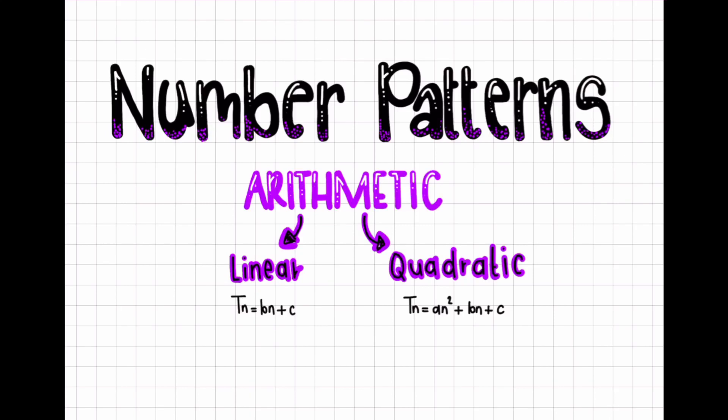Hi everyone, welcome to our second video on number patterns. We're talking about arithmetic number patterns — arithmetic means that the number pattern has a constant difference. Arithmetic number patterns are broken up into two types: linear number patterns and quadratic number patterns. Linear number patterns are patterns with a constant first difference, and quadratic number patterns are patterns with a constant second difference.